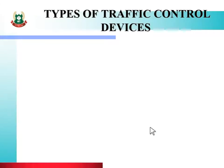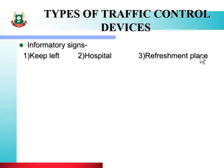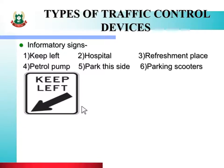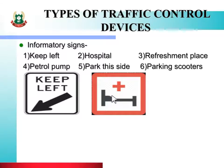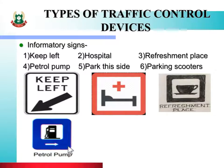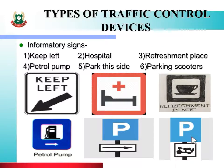Next type of signs are informatory signs — road user ko information provide kiya hai. Ismein aate hain: keep left, hospital, refreshment place, petrol pump, park this side, parking scooters. These are the symbols for keep left, hospital, refreshment place, petrol pump, park this side, and parking scooters. These are the various informatory signs provided on the road side.